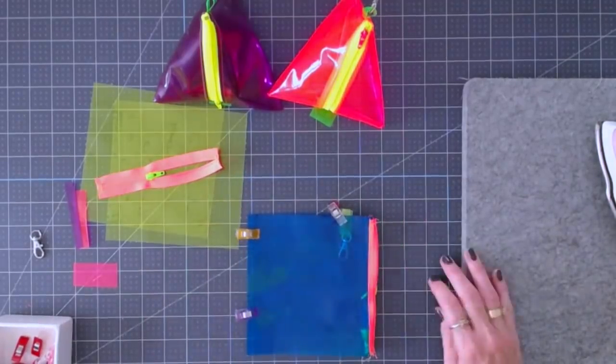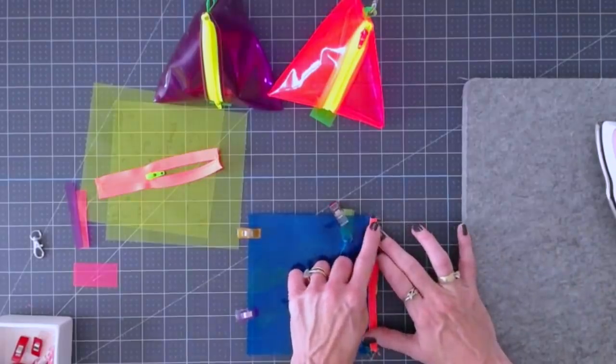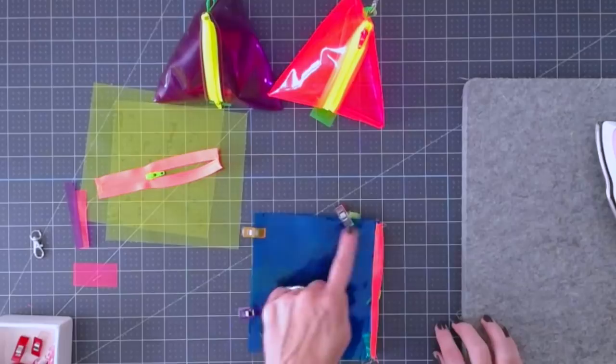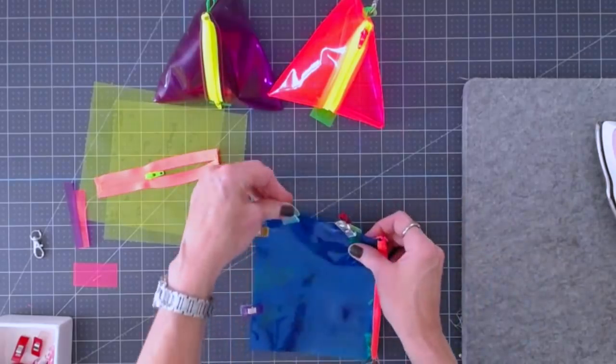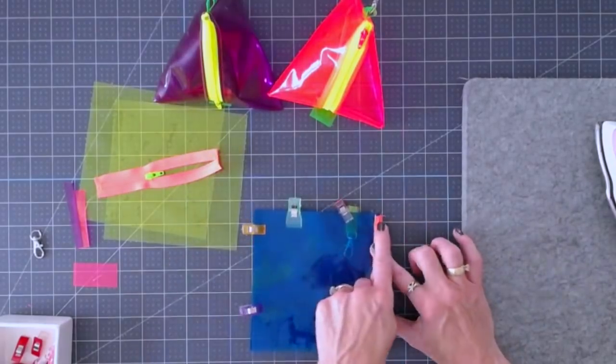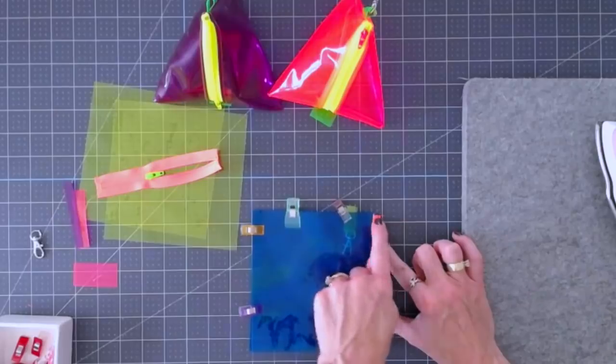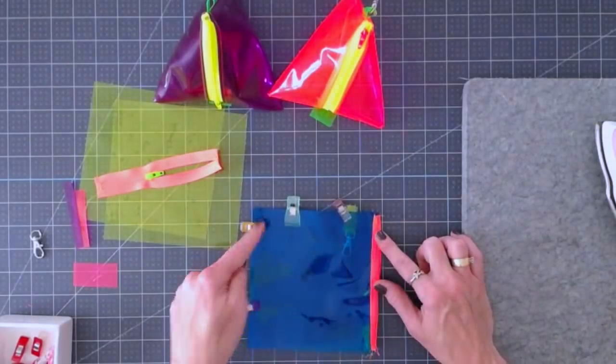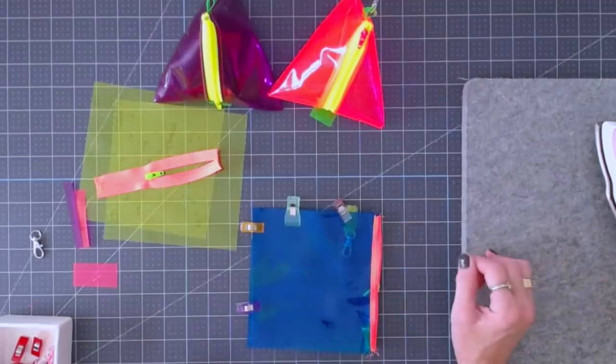Now you're going to take this over to your sewing machine and you're going to stitch here and down here. We're leaving this bottom part open, so just where I have the clips we're going to be stitching. And when you go over this zipper you want to backstitch two or three times just to make sure that you've got a nice stop in there. So you're going to sew there and down here, backstitches beginning and the end.